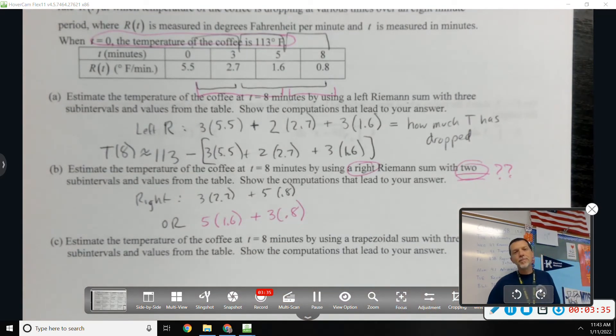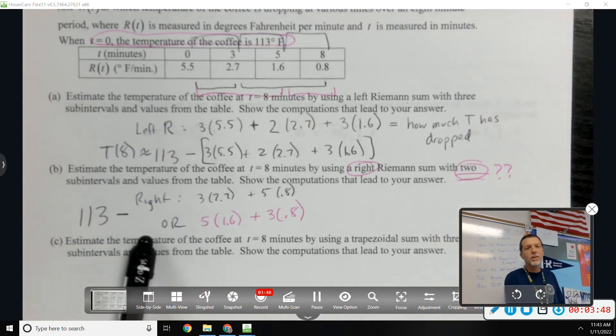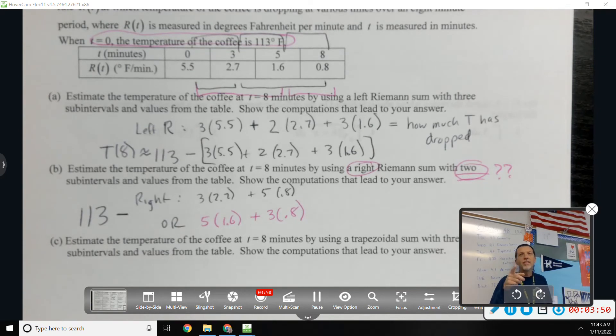So that would be 5 wide times 1.6 plus 3 wide times 0.8. Or these all get the same answer, right? They would not give you the same answer. Well, they might, but they don't necessarily give you the same answer. How would you make that? And again, you'd still need to do 113 minus whichever one of those things you wanted to do. So I wouldn't give that question because I'd have to accept two answers.